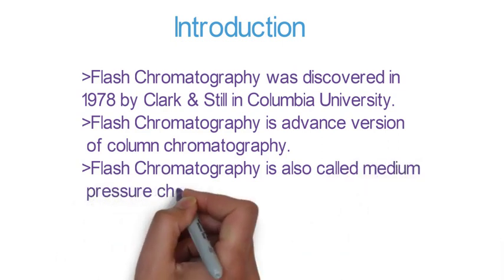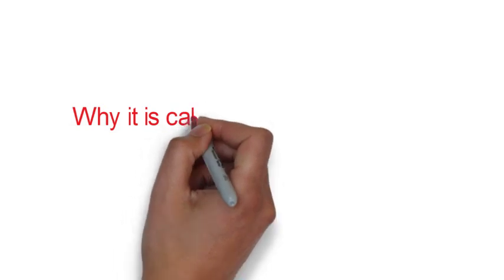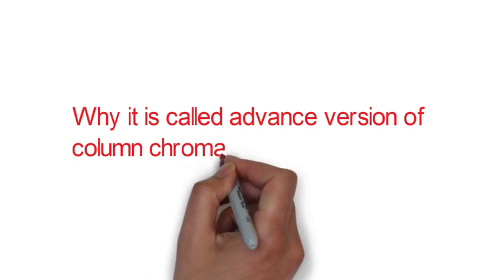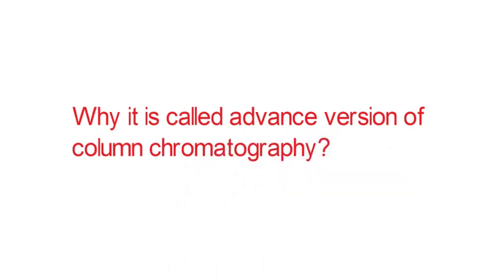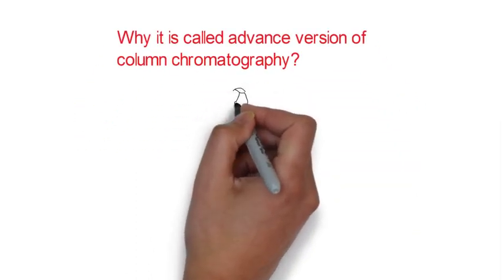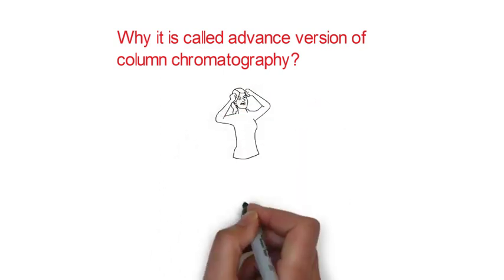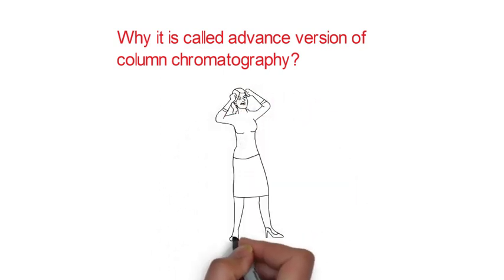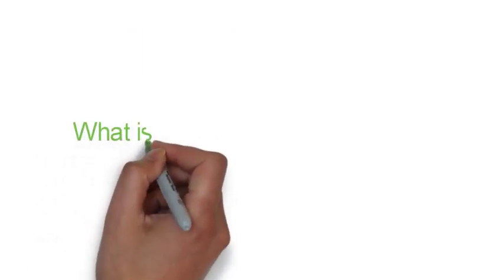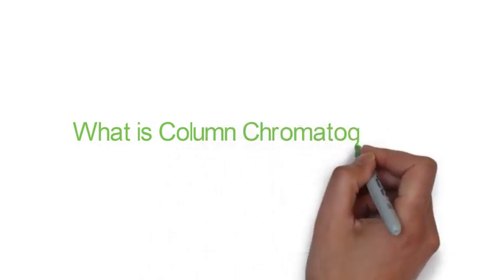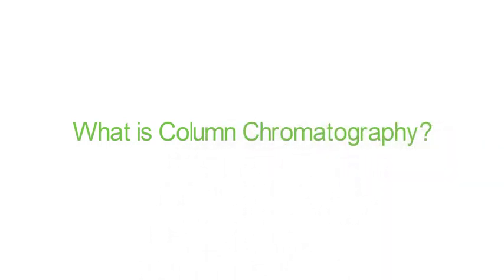Flash chromatography is an advanced version of column chromatography. Flash chromatography is also called medium pressure chromatography. Now the question comes to mind: why is it called advanced version of column chromatography? For that purpose, one should know what is actually column chromatography firstly, then we will understand the concept of flash chromatography.